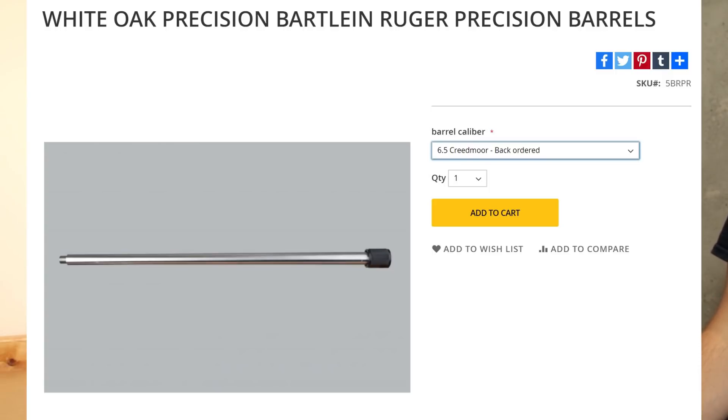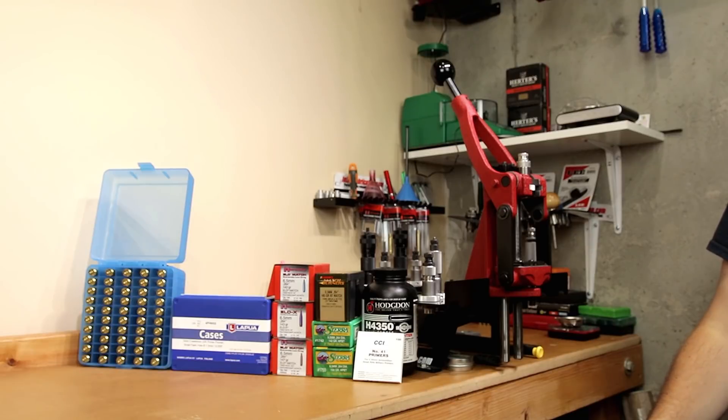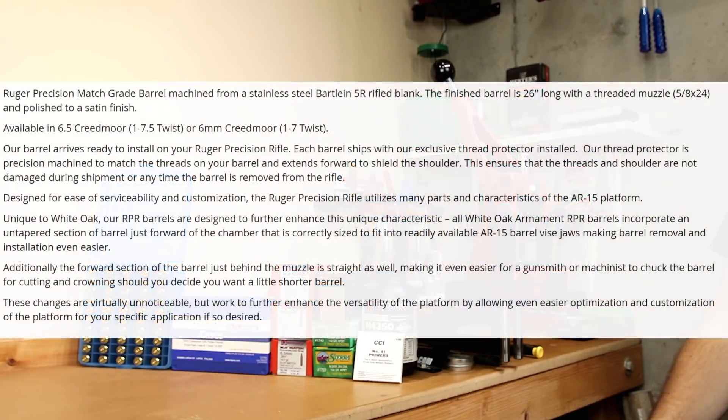This particular barrel is from White Oak Precision. This is the Bartland Ruger Precision Rifle barrel. This barrel is chambered in 6.5 Creedmoor, just like our stock one was. However, this is a 26-inch versus 24. Instead of the 1-8 twist that came with our factory barrel, we've sped it up just a little bit and went with the 1-7.5 twist.